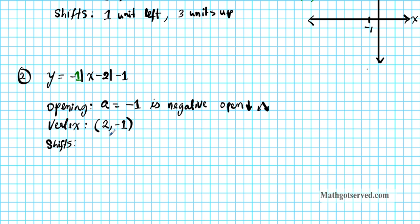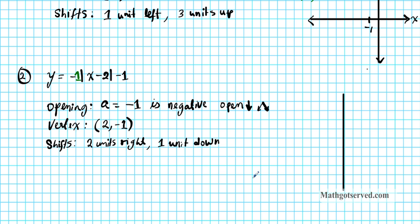The vertex also tells us the shifts. Since x gives positive 2, you move 2 units to the right. Since y gives negative 1, you move 1 unit down. That takes us to quadrant four. Since we're in quadrant four, we move our y-axis to the left a little and shift our x-axis upwards to compensate for the shifts on the vertex.